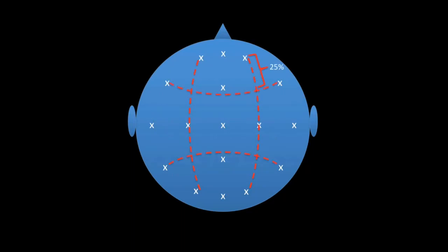Finally, transverse measurements are made. The intersections of these lines are where the final electrodes are placed. Once all of these marks have been placed, the electrodes can be applied to the scalp of the patient.